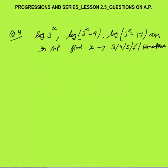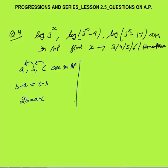Next question: log(3^x), log(3^(x−9)), log(3^(x−17)) are in AP — find x. We use the property that when three terms a, b, c are in AP, the difference between consecutive terms is equal, so b−a = c−b, which gives 2b = a+c. The twice of the middle term equals the first plus third.